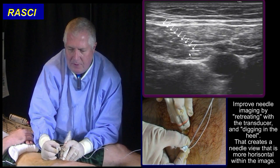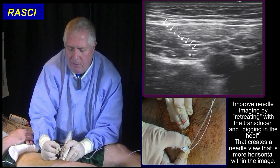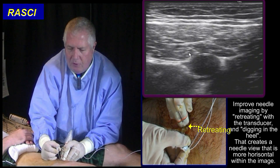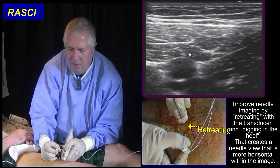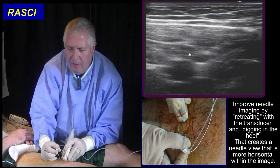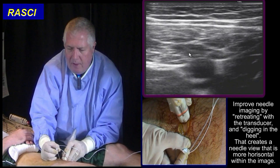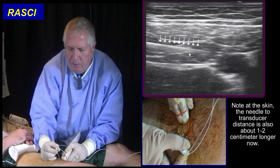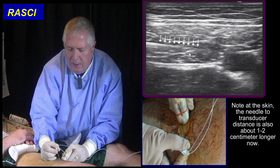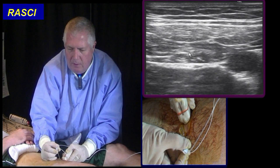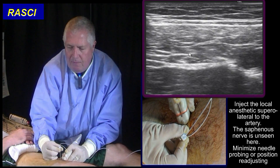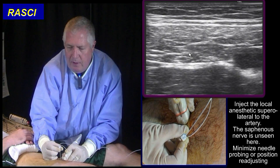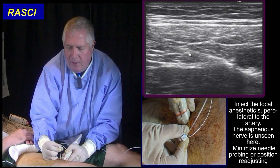Watch what I'm going to do. I'm going to retreat with my transducer so the image moves across. I retreat and then I dig the heel in and I look back. What that will do is make my needle more horizontal, and all I want to do is get next to that artery. I may feel a little fascial pop. I aspirate — reject a bit of dextrose water.